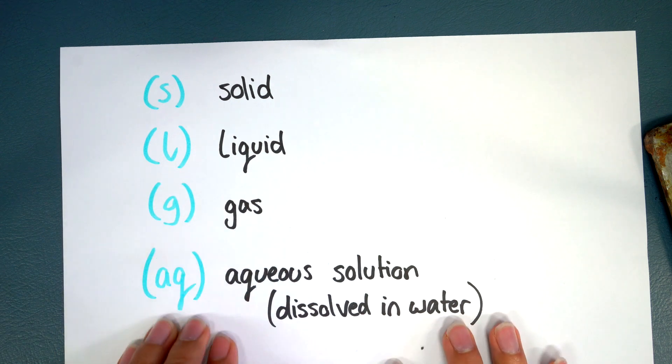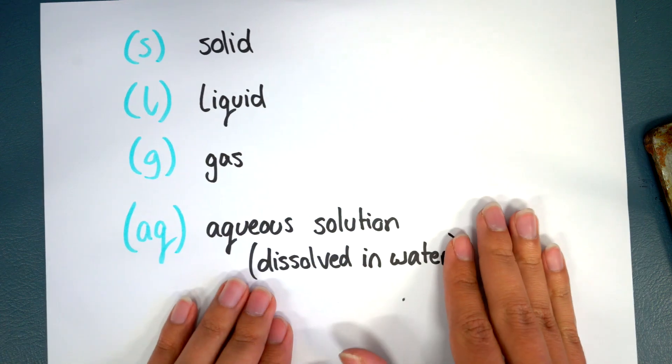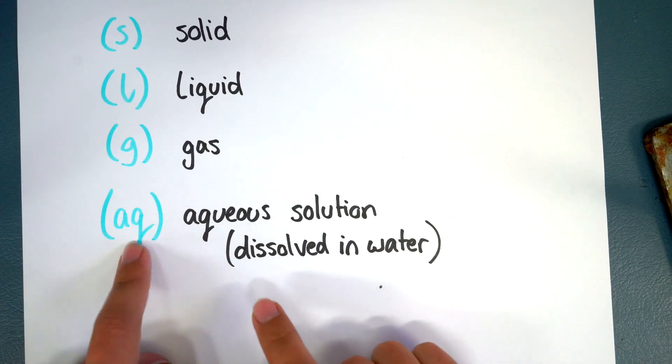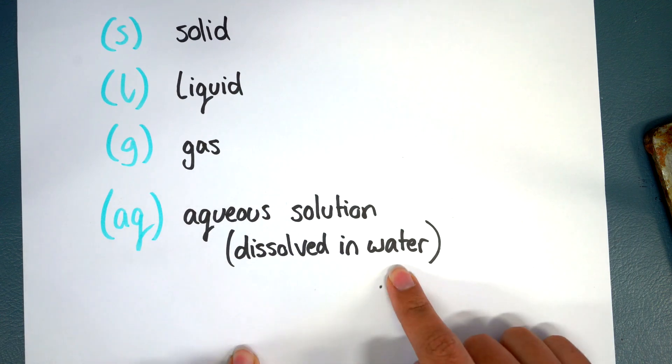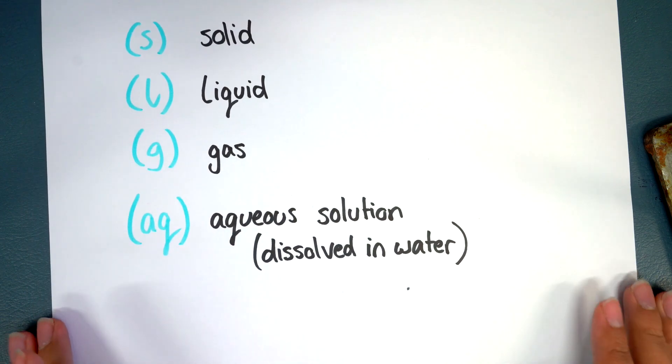G is for gas and AQ is actually for aqueous solution and that usually gets people confused but it basically means this thing is dissolved in water. So if you can imagine seawater that is an aqueous solution of sodium chloride, the salt.